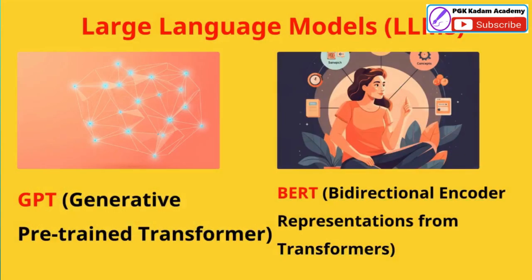Large language models like GPT and BERT are powerful AI systems that can understand and generate human-like text. GPT models from OpenAI, starting with GPT-3 and now GPT-4, can help with a wide range of tasks: writing stories, answering questions, coding, and problem-solving. Millions of people use GPT-powered tools every day. Google's BERT helps search engines better understand the full meaning of sentences, not just individual words, allowing Google Search to provide more relevant and accurate results to billions of users.